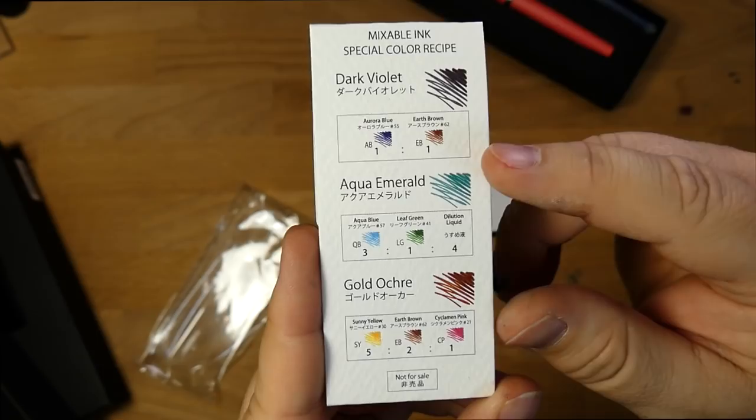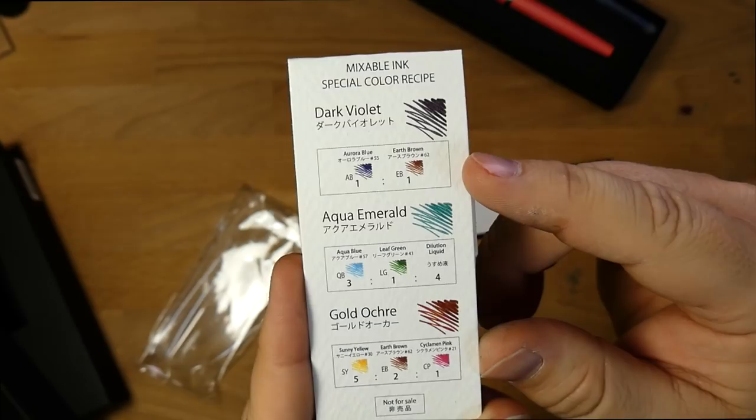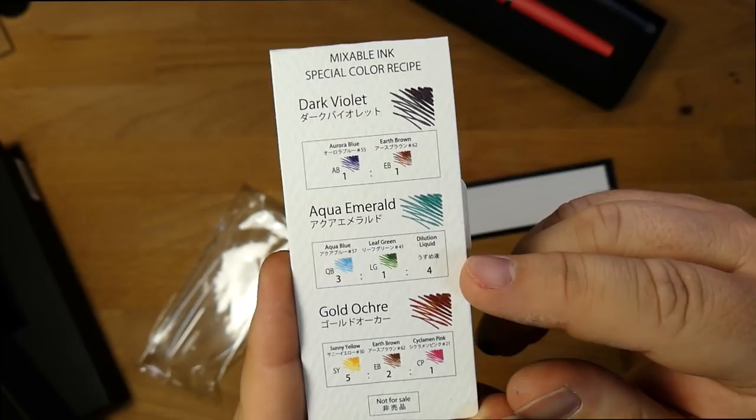Look at that. How neat is that? So for this one, you want one part earth brown and one part aurora blue, which is not by the company Aurora. It's a color called Aurora Blue, which is a little bit distracting, but whatever.